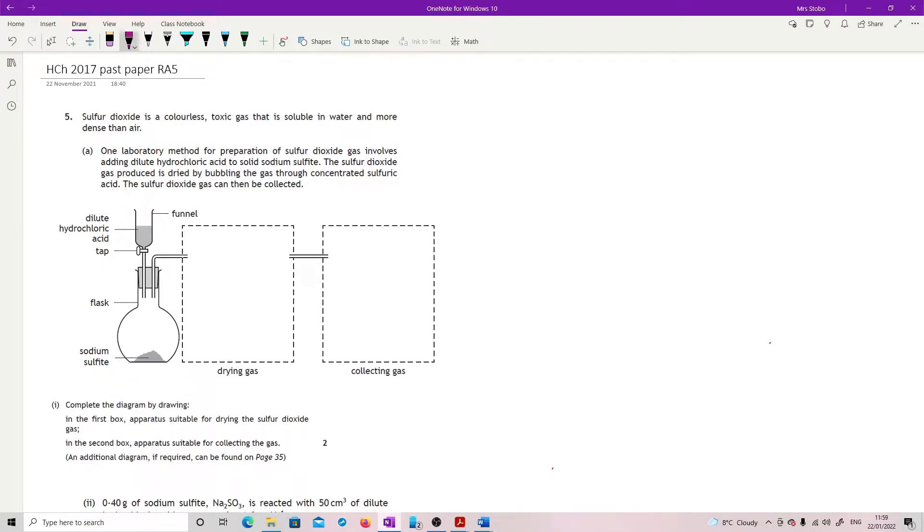Sulfur dioxide is a colourless toxic gas that is soluble in water and more dense than air. One lab method for preparation of sulfur dioxide gas involves adding dilute hydrochloric acid to solid sodium sulfate. The sulfur dioxide gas produced is dried by bubbling the gas through concentrated sulfuric acid. The sulfur dioxide gas can then be collected.